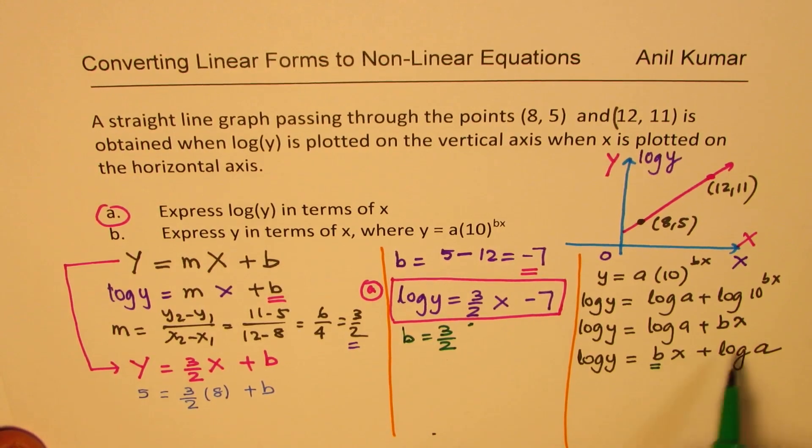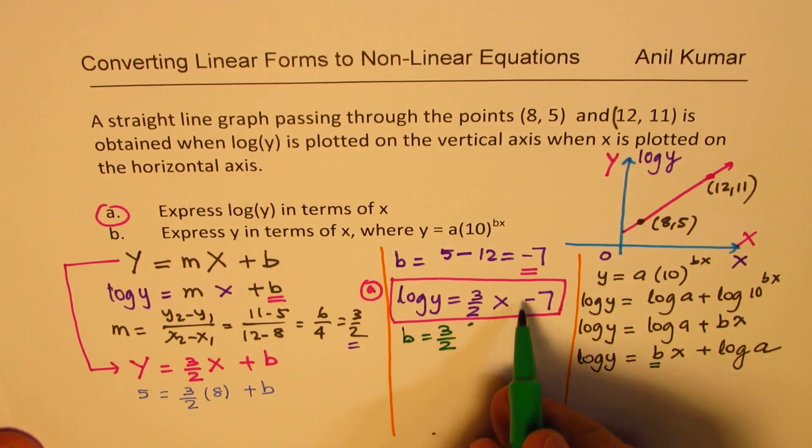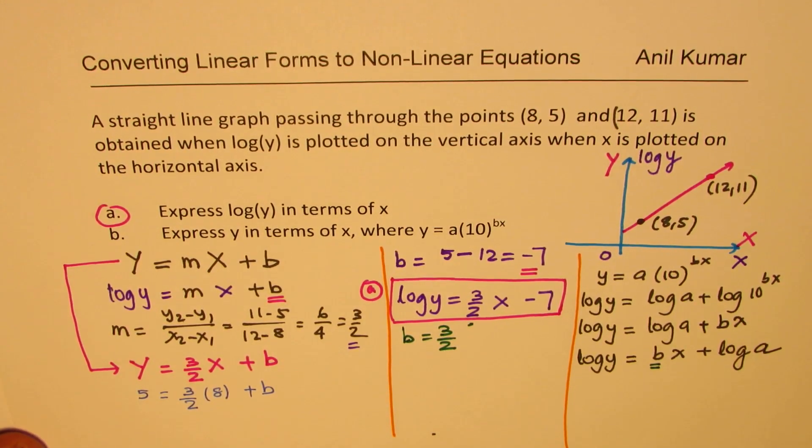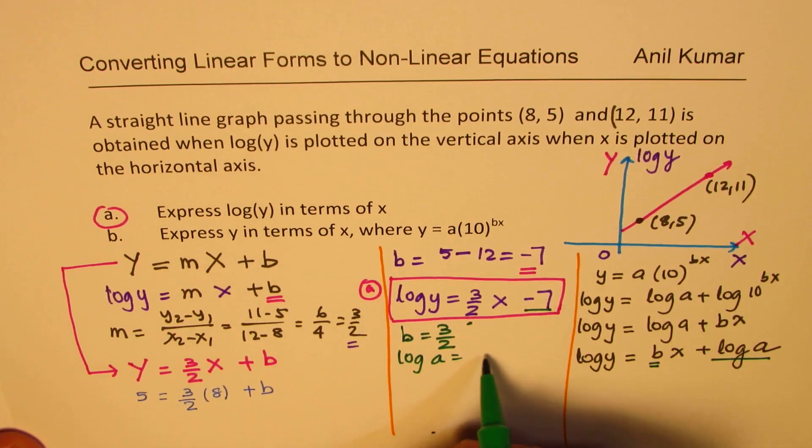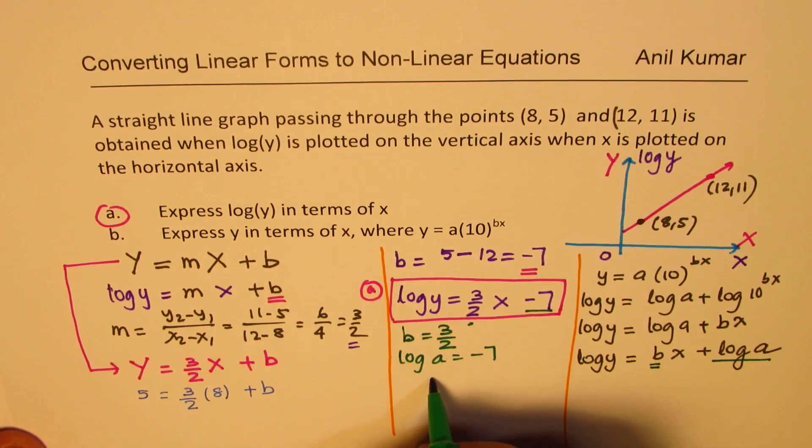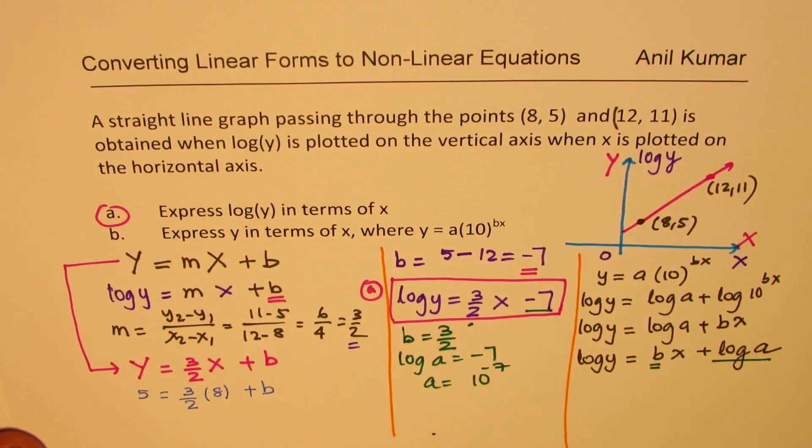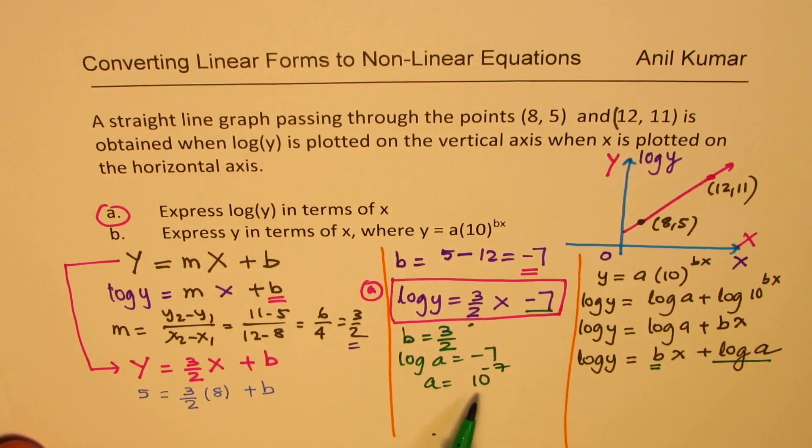How about a? Well, log(a) is -7. So when you compare, what do we get? We get log of a equals -7, and that gives you a as 10 to the power of -7. So a is 10 to the power of -7.